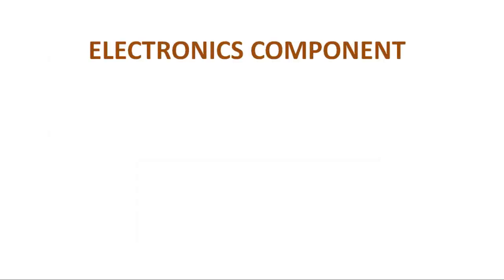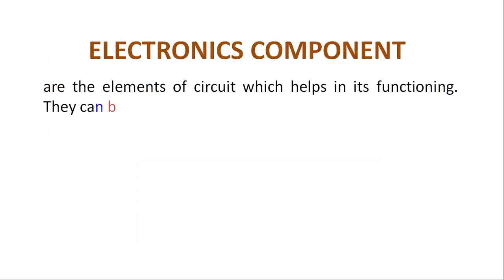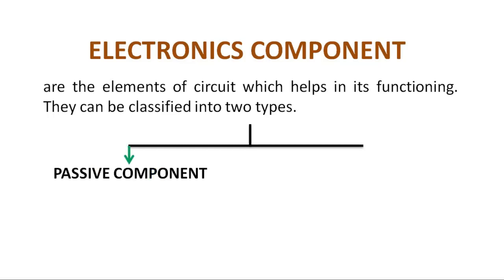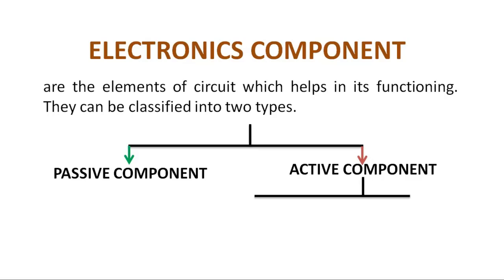Electronics components are the elements of a circuit which help in its functioning. They can be classified into two types: passive component and active component. Active components are classified into tube devices and semiconductor devices.